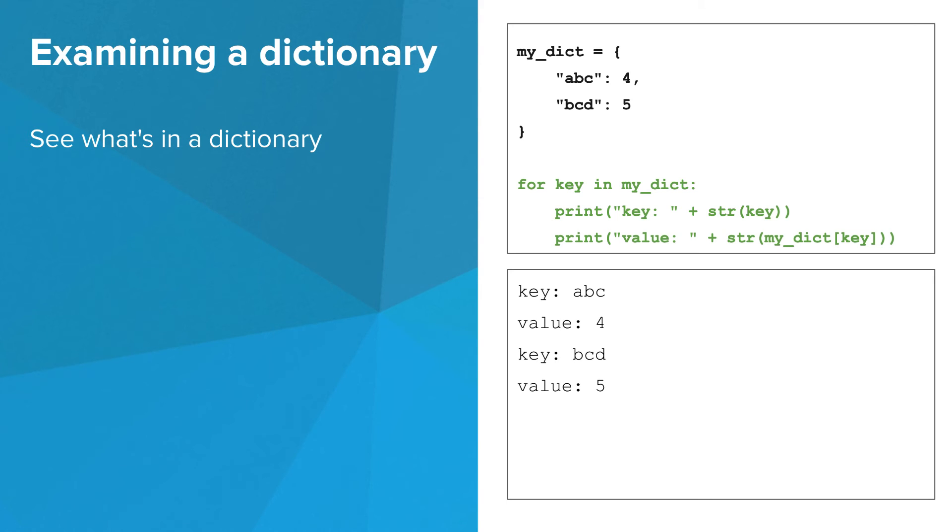This for loop looks similar to a for loop over a list. The variable key, in this case, cycles through each key in the dictionary. You can then use that key to access the value.